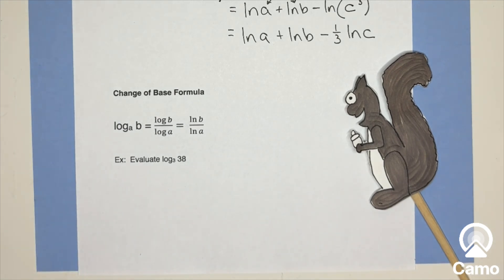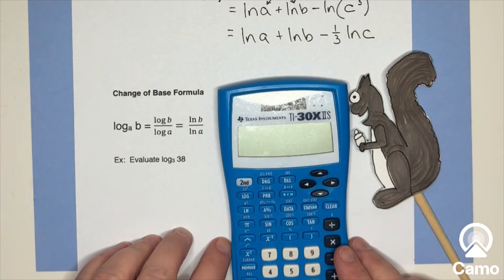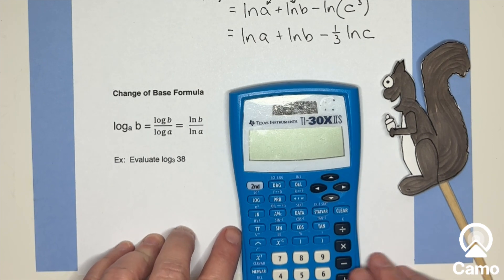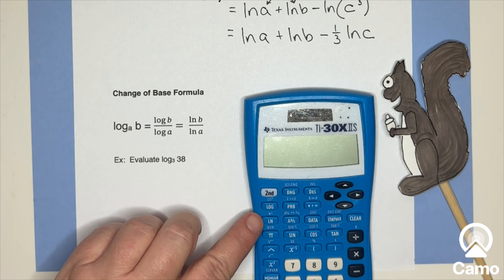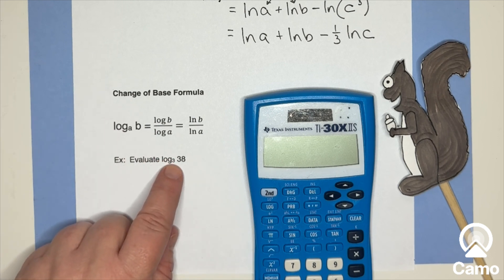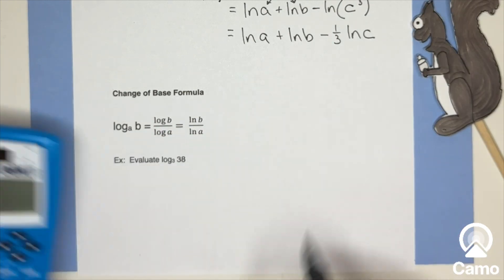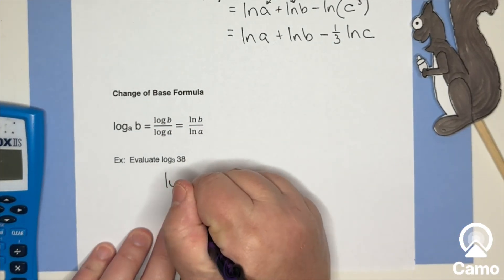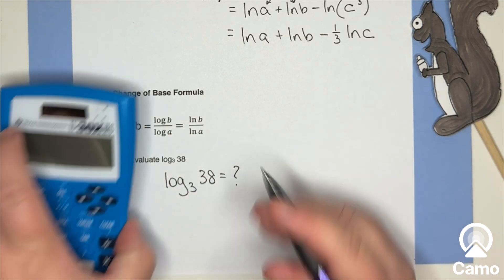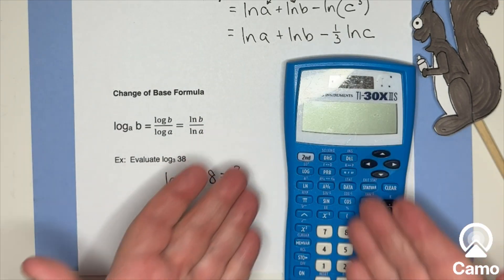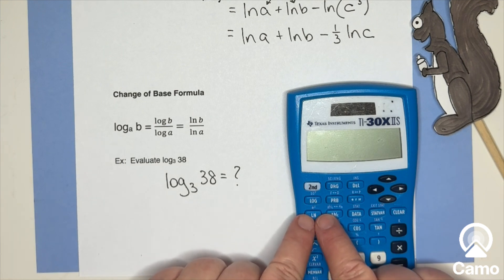Well, it's helpful because now, depending on what calculator you have, some calculators are really fancy and they have all the logarithms. You can do any logarithm you want, but this one only has common log and natural log. So if you do get an interesting log, like log base three of 38, if I want to evaluate log base three of 38,